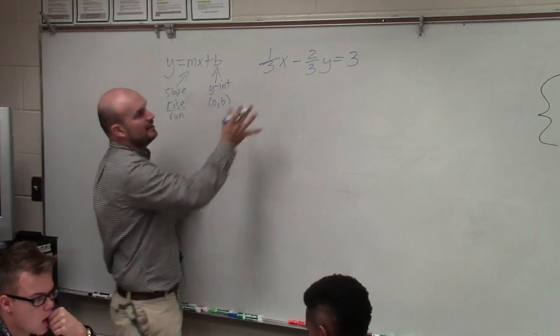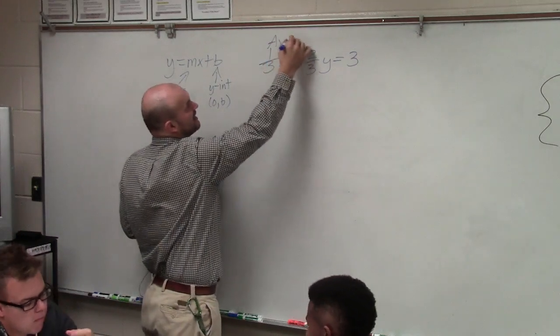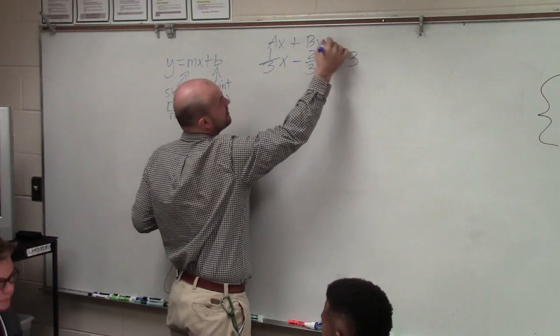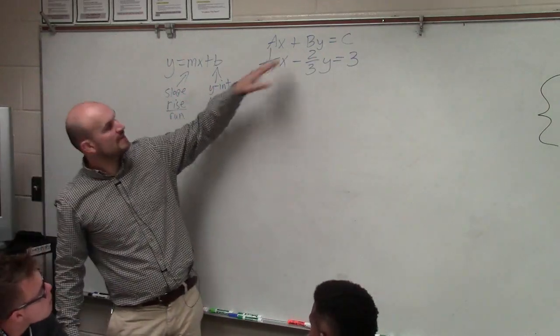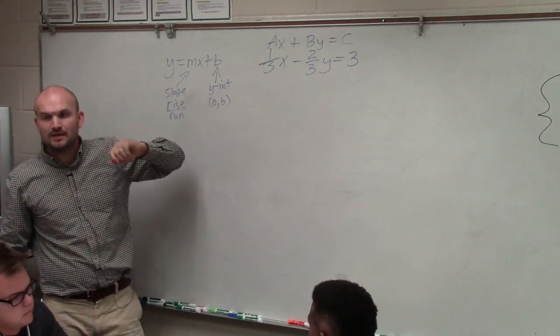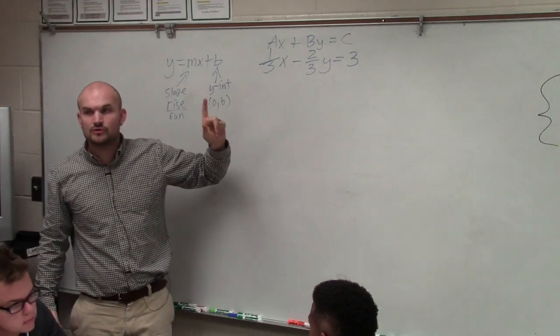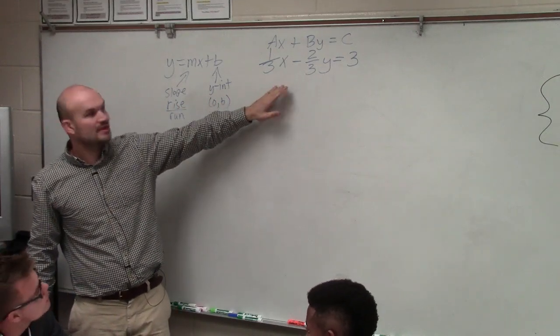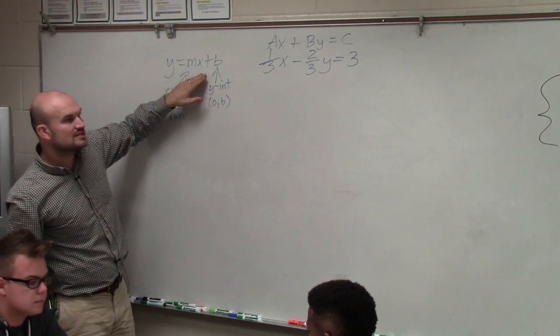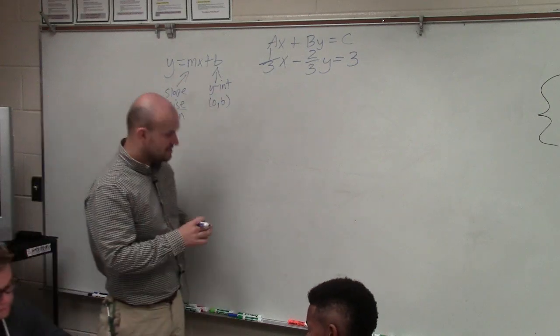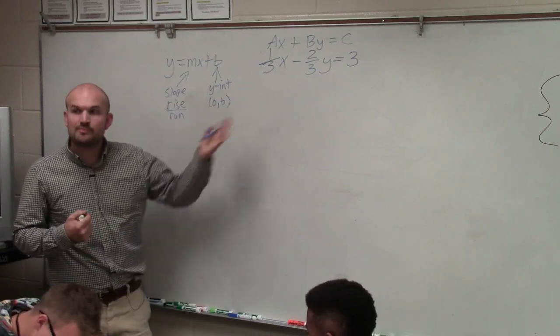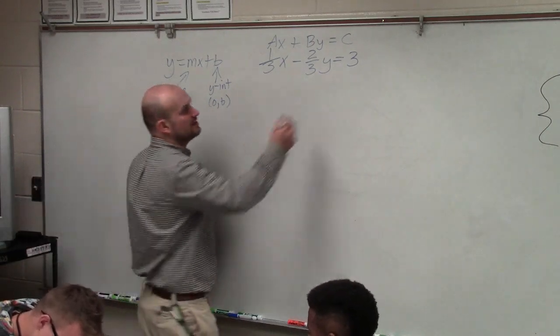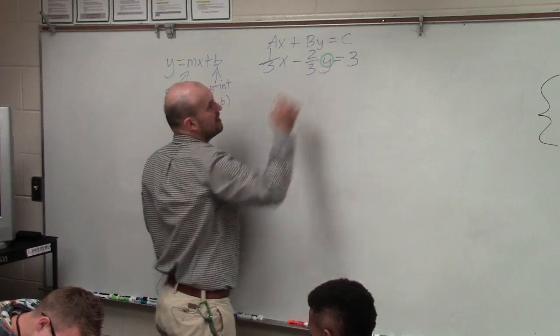So the problem we have here is we have an equation that is not in slope-intercept form. It is in what we call standard form. And standard form is in the form ax plus by equals c. So the first way we're going to learn how to graph an equation in standard form is to rewrite it so it's in slope-intercept form. Now, this is actually not as foreign as you guys may think, because we practiced these problems when we were doing solving literal equations.